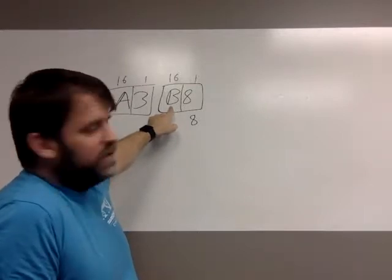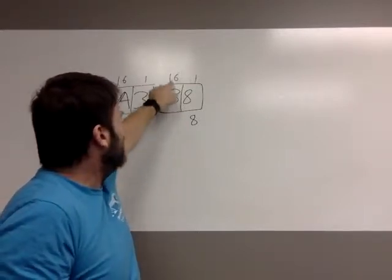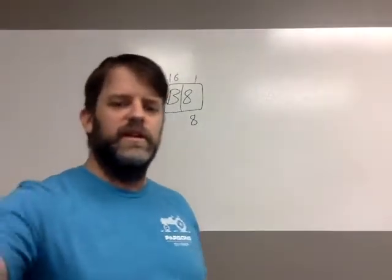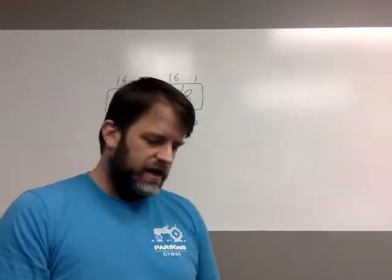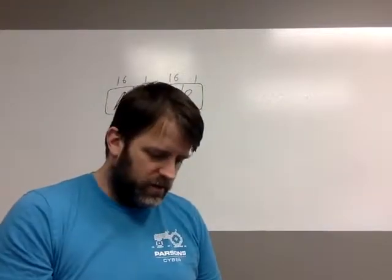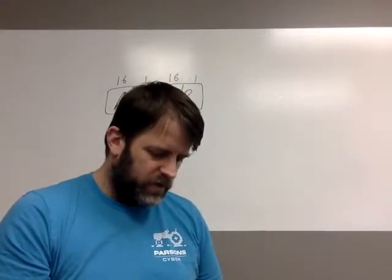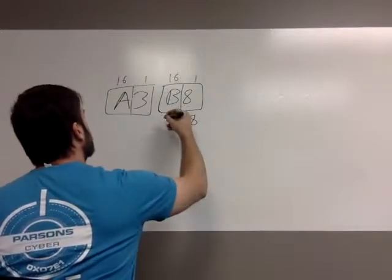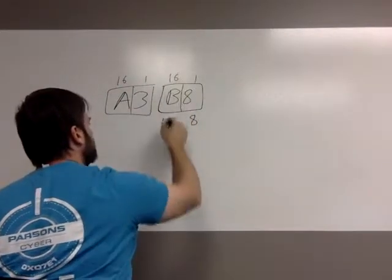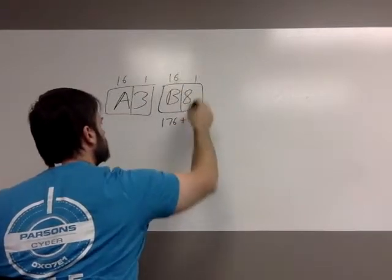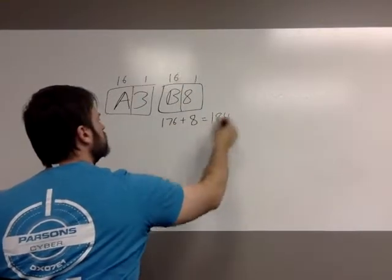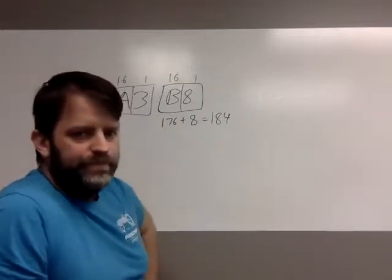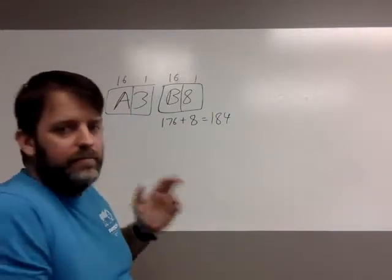A is 10, B is 11. So this value is 11 times 16. I'm using the calculator on my phone since I can't throw the calculator up on the screen while we're recording. 11 times 16 is 176. So the value of this place is 176, and the value of this byte is 184. So if this is part of an IP address or whatever, the value of that byte is 184.